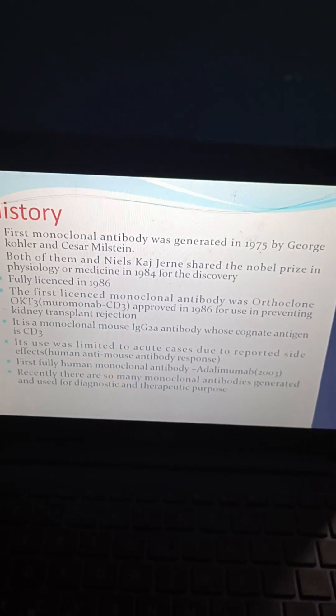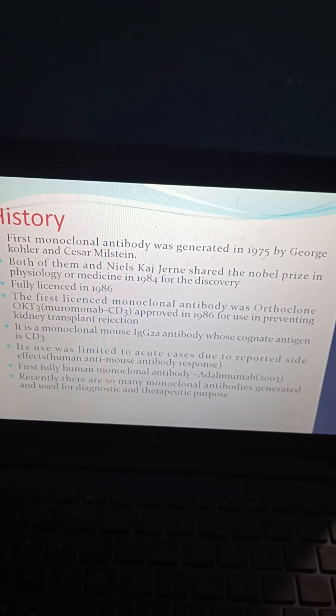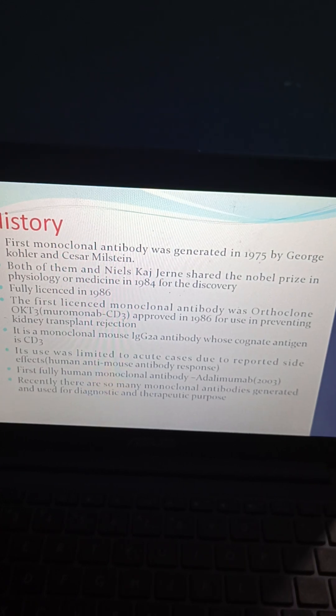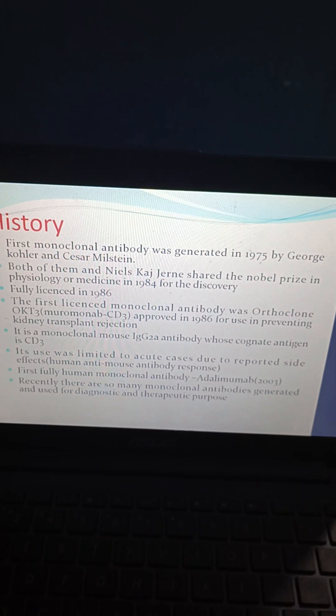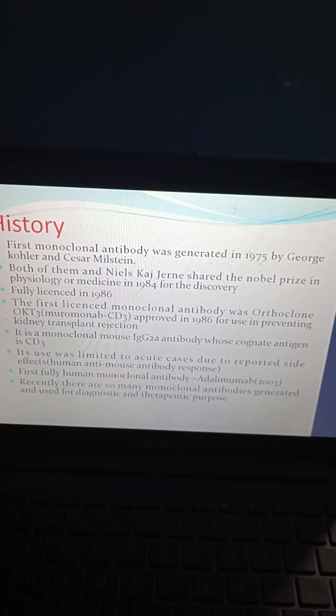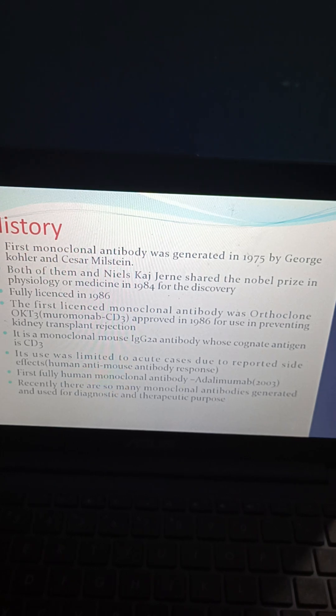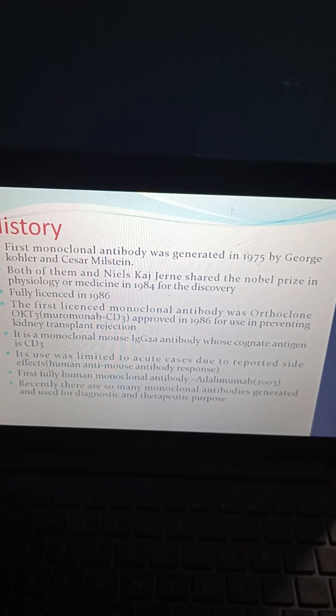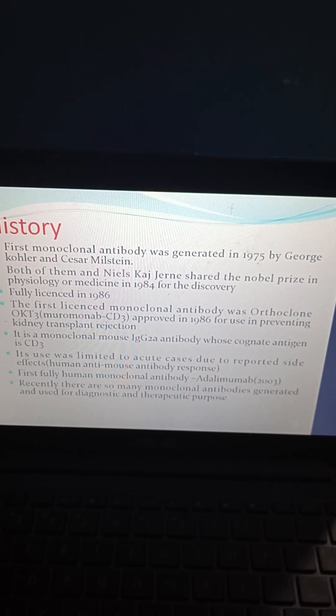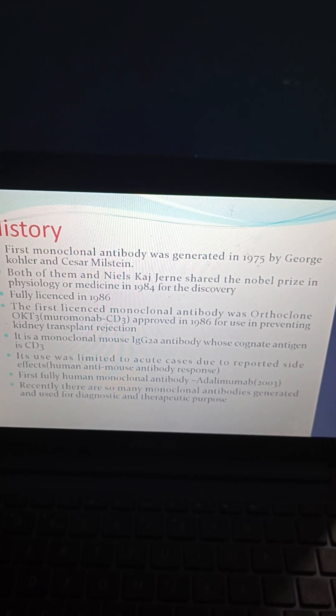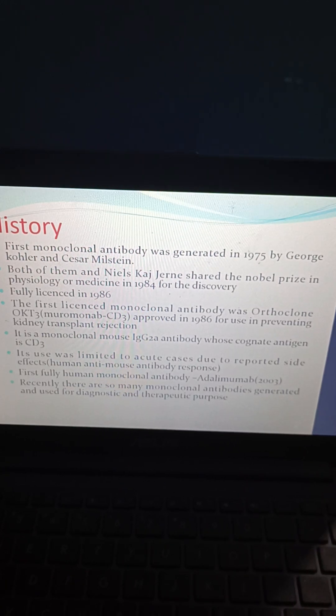Coming to history: the first monoclonal antibody was generated in 1975 by George Kohler and Cesar Milstein. Both of them and Nils Jerne shared the Nobel Prize in Physiology or Medicine in 1984 for the discovery. The first fully licensed monoclonal antibody was OKT3 muromonab-CD3, approved in 1986 for preventing kidney transplant rejection. Its use was limited due to human anti-mouse antibody response side effects. The first fully human monoclonal antibody, Adalimumab, was approved in 2003.